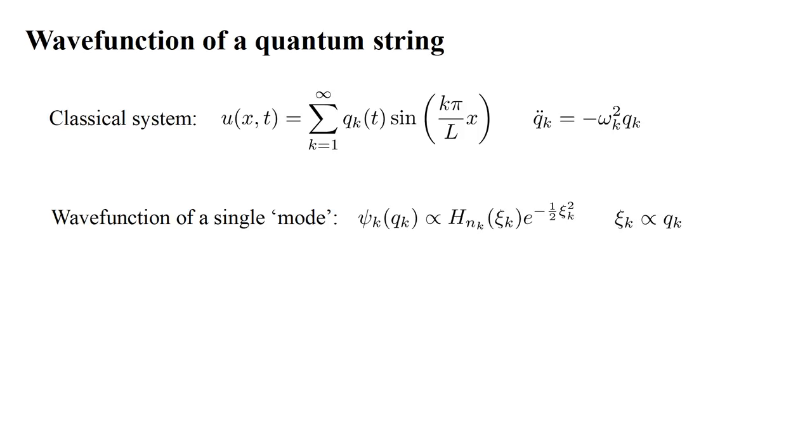The wave function for a single mode has the characteristics we established in the previous video. Psi k of q_k is proportional to a polynomial H_n_k of psi k times e to the minus one-half psi_k squared, where psi_k is proportional to the amplitude q_k.